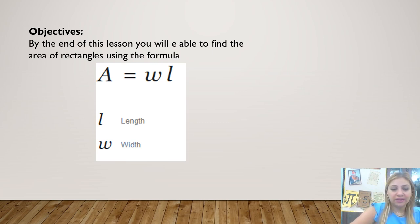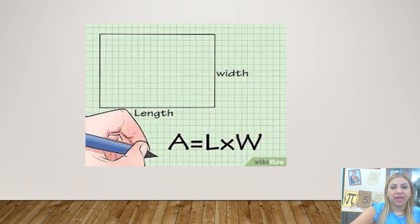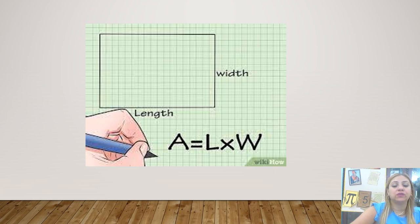L represents length and W stands for width. And this is an example. As you see, this is the length — the long side — and this is the width, the shorter side. If you multiply them by each other, you will be able to find the area, which is the space inside the shape.